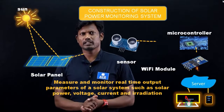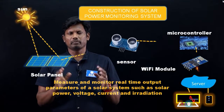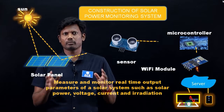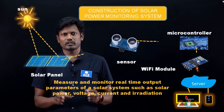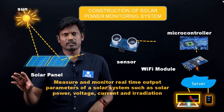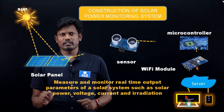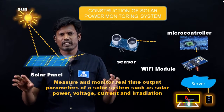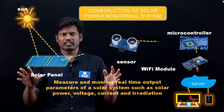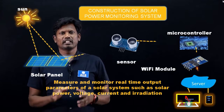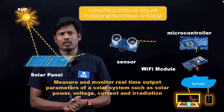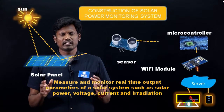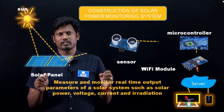By using this system we can measure and monitor the real-time output parameters of a solar system such as solar power, solar voltage, solar current, and irradiation or temperature at any instant of time.